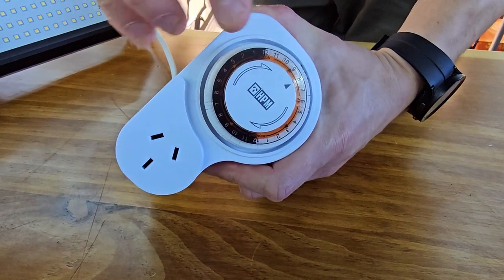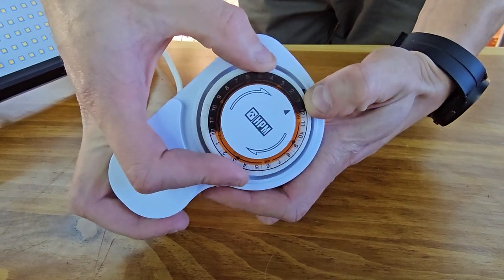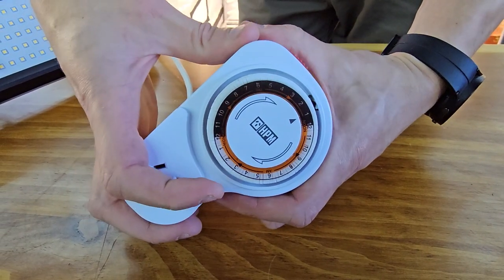So first thing you want to do is calibrate the time. So let's say it is 1pm, I'm just going to rotate that till we get to 1 o'clock on the timer. Magic.